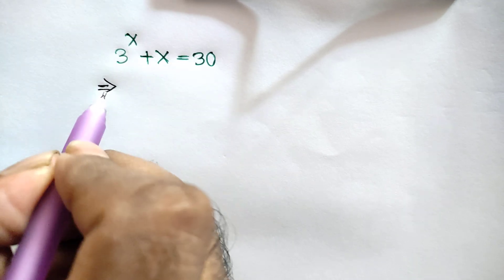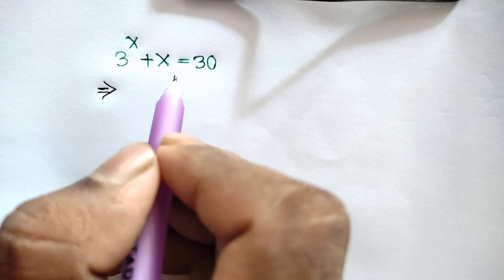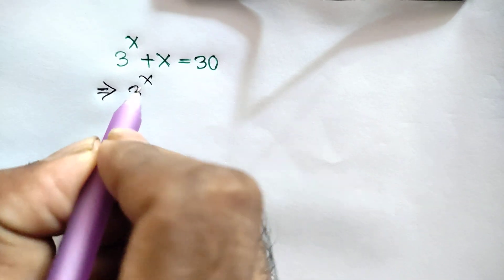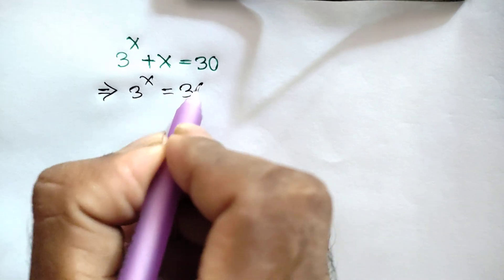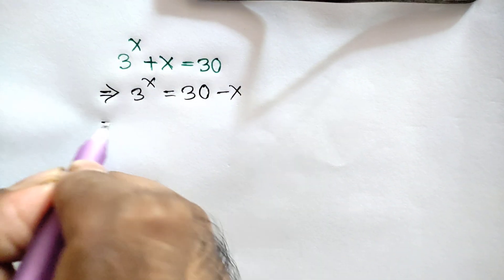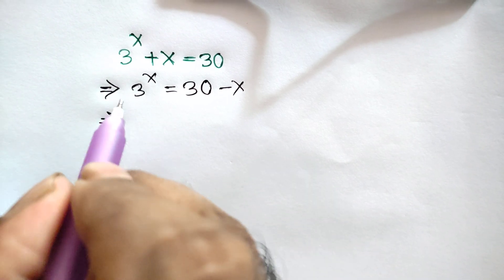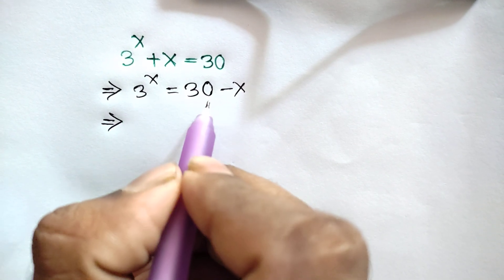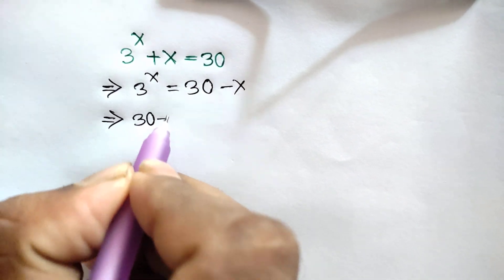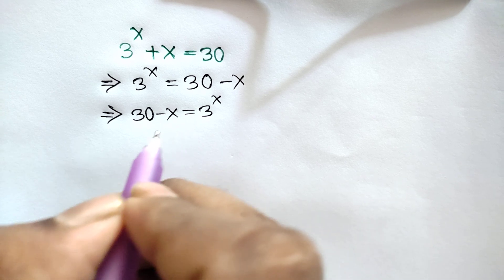If we take this x to the right side, we will get 3 to the power x is equal to 30 minus x. Or, if we exchange sides, we will get 30 minus x is equal to 3 to the power x.